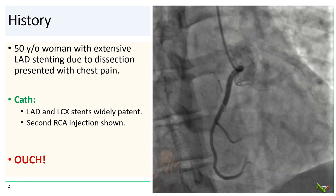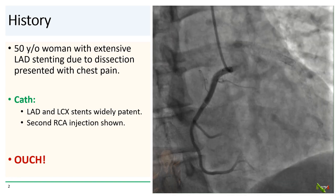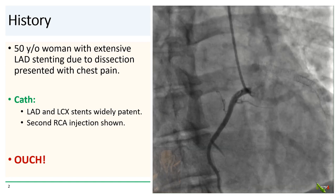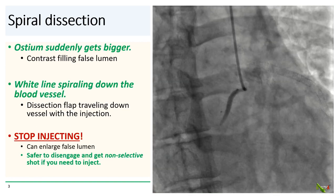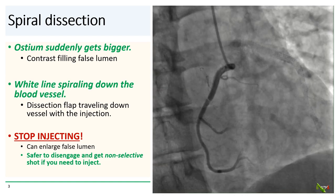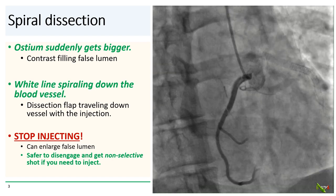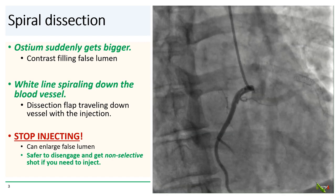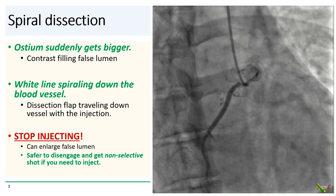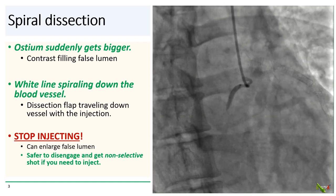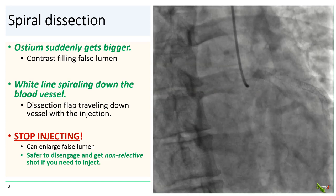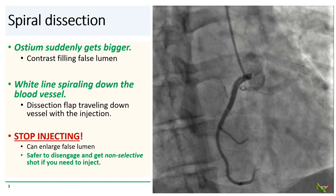We see the RAO injection of the RCA here. Now look at the angio carefully — you almost get a visceral reaction looking at it. What we see is a spiral dissection of the RCA from its ostium down, caught on cine. You see several striking features: the ostium suddenly gets bigger from the contrast now filling the false lumen. You see the white line that spirals down the blood vessel — that's the dissection flap traveling down the vessel with the contrast injection.